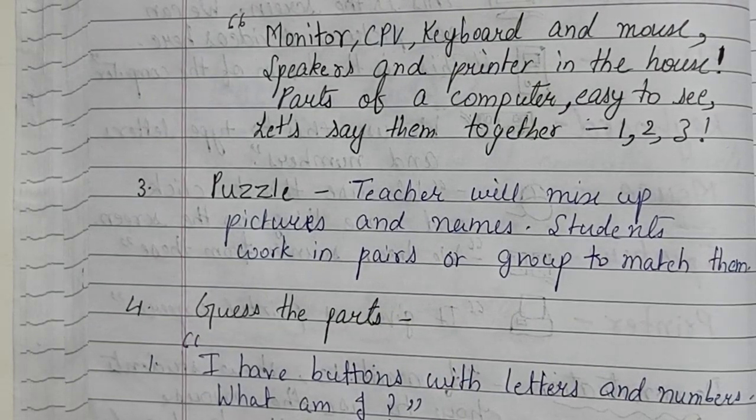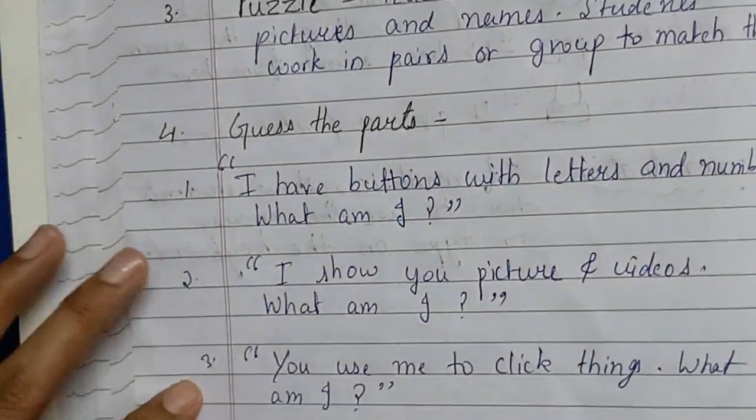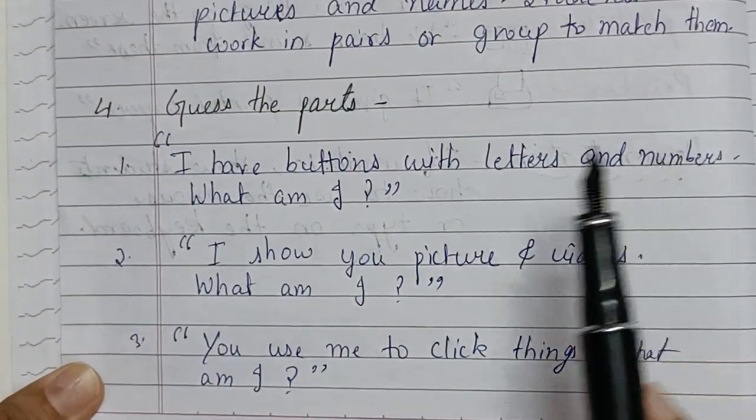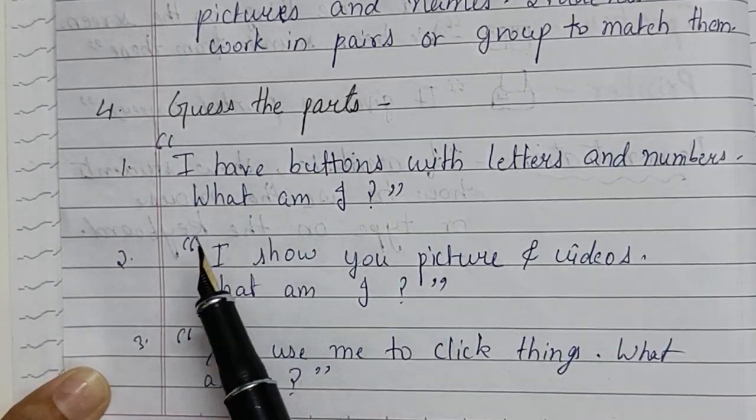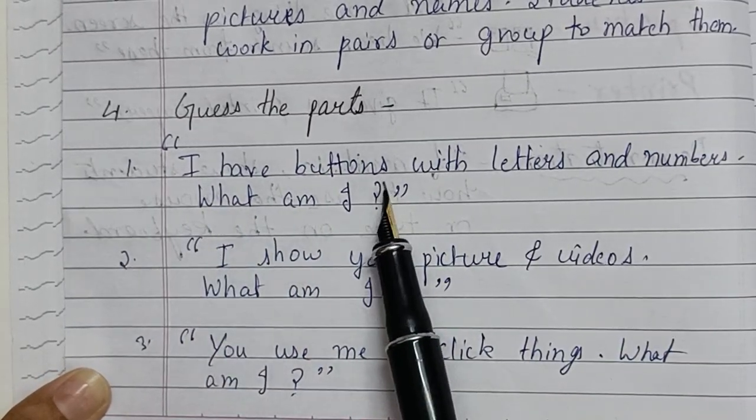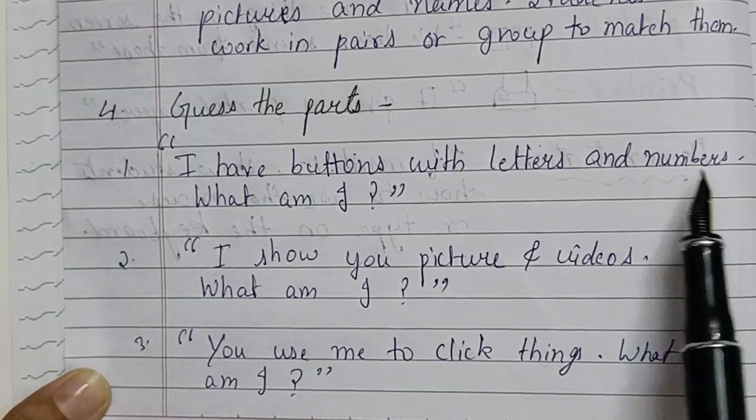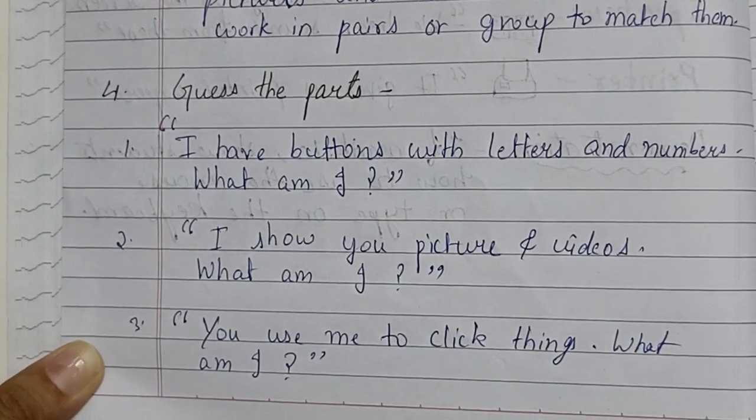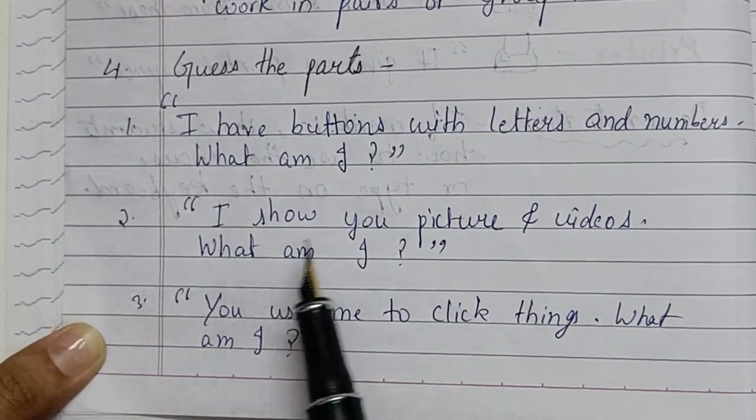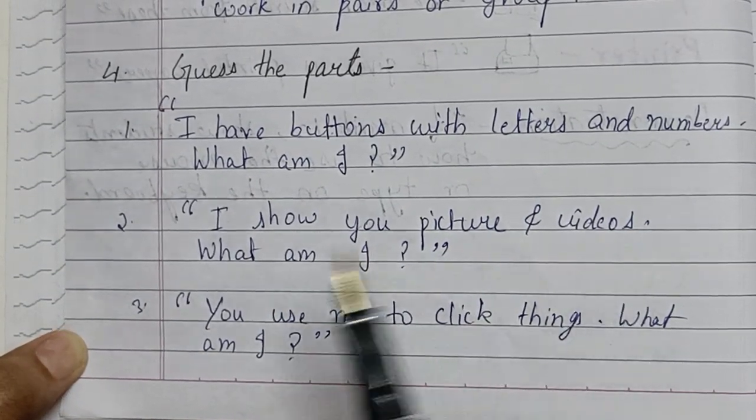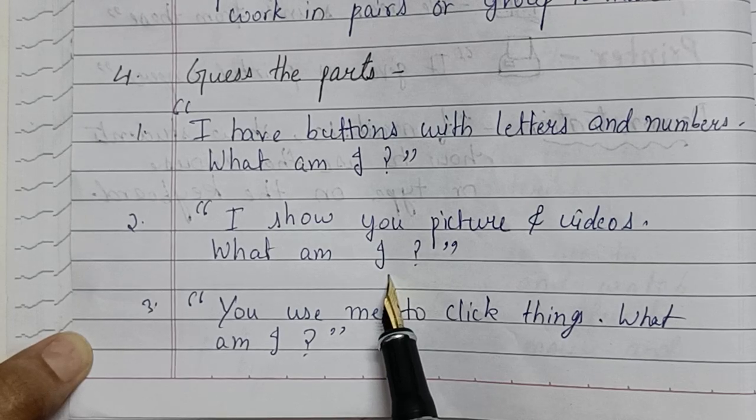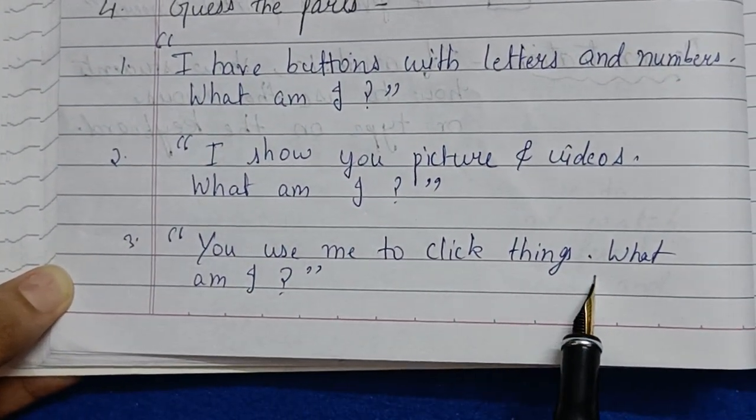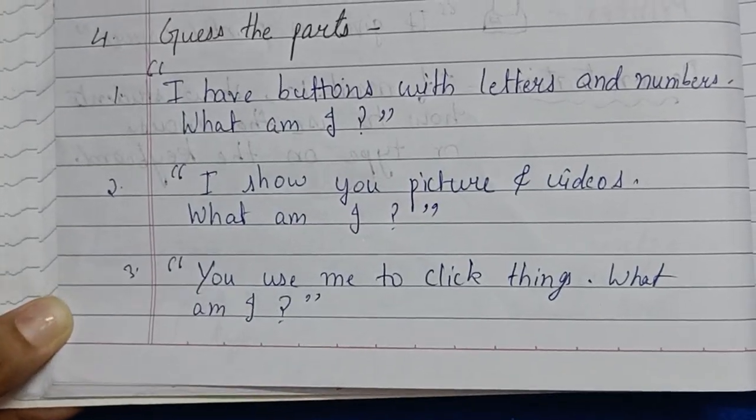Next, guess the parts activity. Students will guess the answer: "I have buttons with letters and numbers, what am I?" Students will answer: keyboard. "I show you pictures and videos, what am I?" Monitor. "You use me to click things, what am I?" Students will answer: mouse.